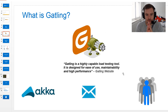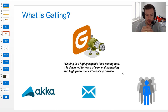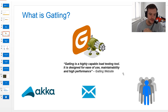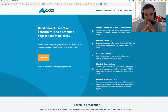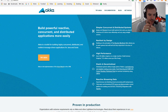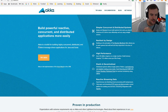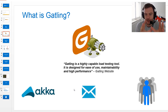So what is Gatling exactly? According to the official Gatling website, Gatling is a highly capable load testing tool designed for ease of use, maintainability, and high performance. Gatling is built on top of a toolkit called Akka. You don't really need to know a great deal about Akka other than it exists. Akka is a toolkit for building highly concurrent, distributed, and resilient message-driven applications for Java and Scala.